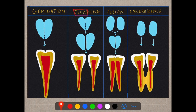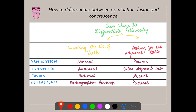Germination is incomplete formation of two teeth, whereas twinning is complete formation of two teeth. In fusion, two normally separated tooth germs are attached through the dentin. In concrescence, the normally separated tooth germs are attached through cementum. How do you differentiate between germination, fusion, and concrescence clinically? There are two ways — the first is counting the number of teeth.